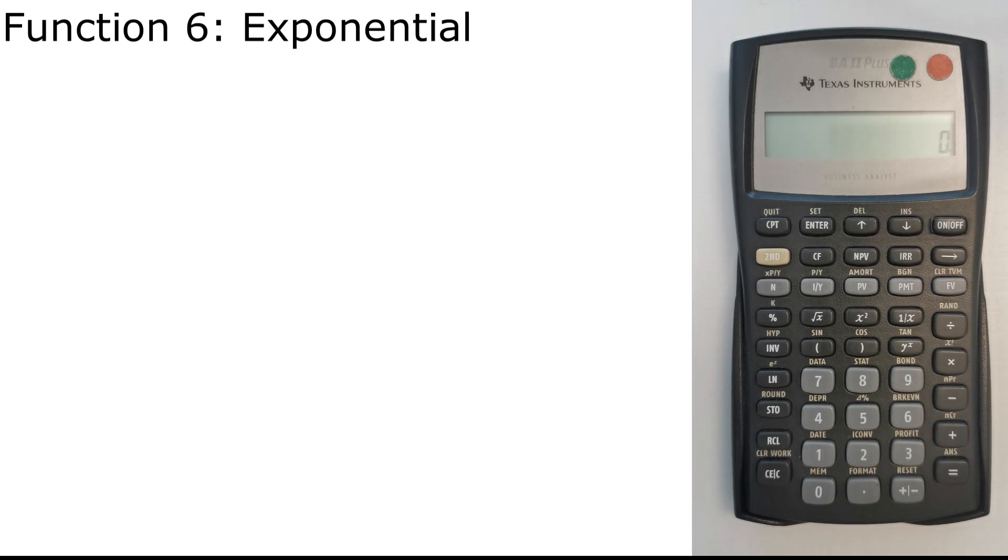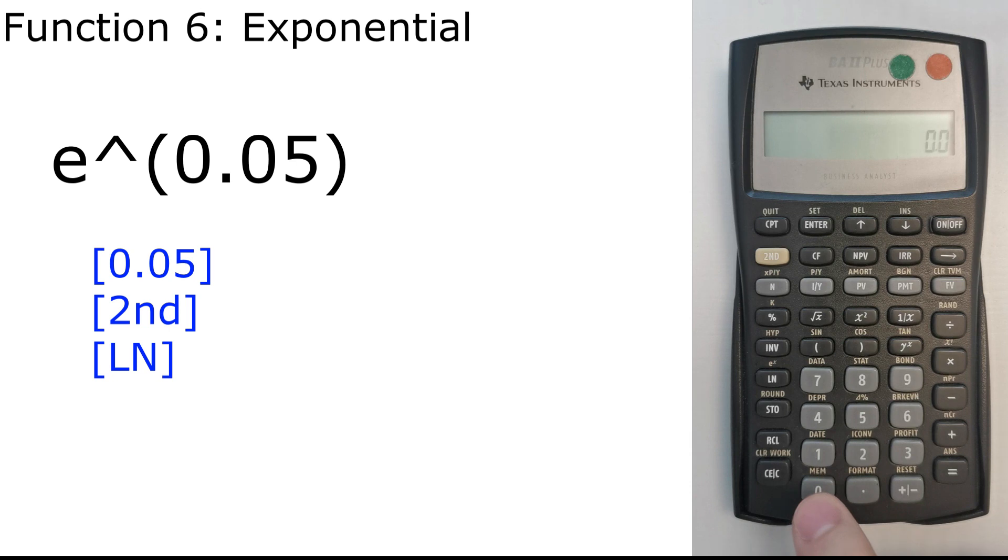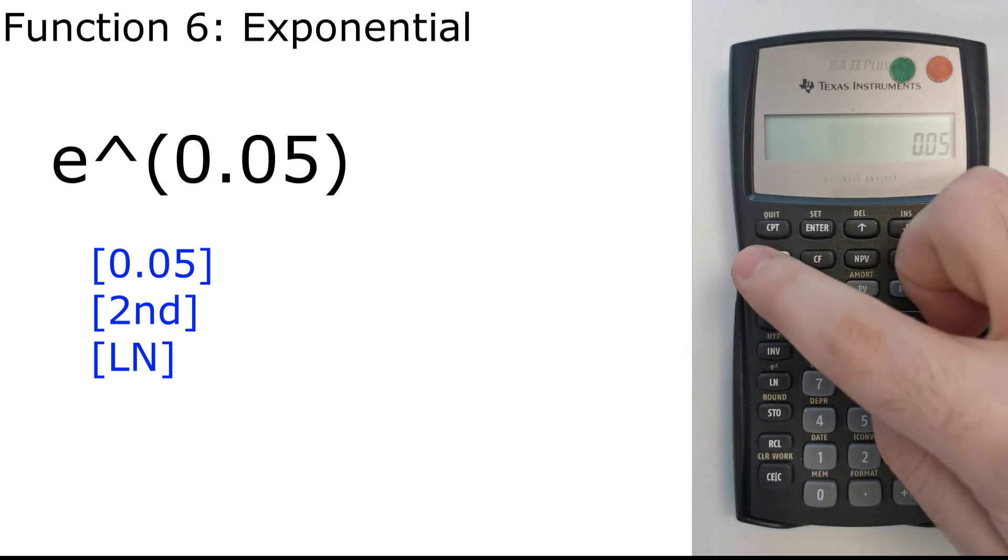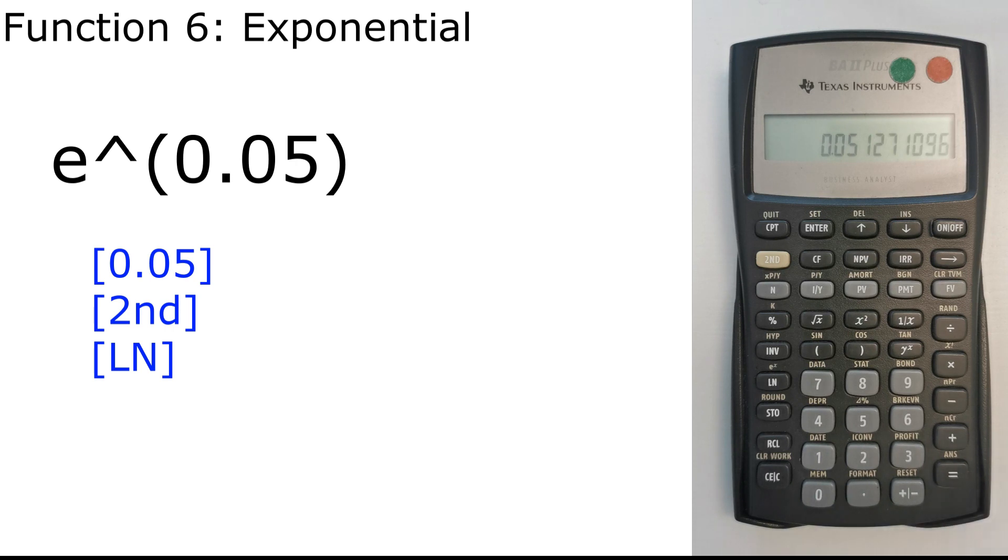And for our 6th function, which is exponential. Let's say we have 5%, but we want to use e raised to the power of 0.05. So what we press is 0.05, then second, ln, as you can see e to the x. So we get 1.05127. So we press minus 1, so it's 5.13%.